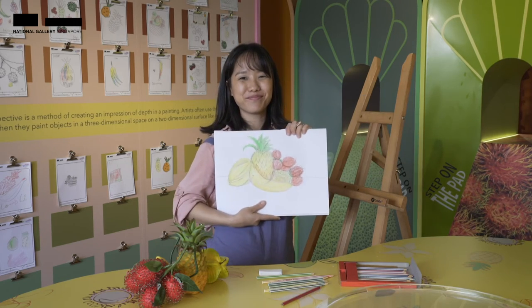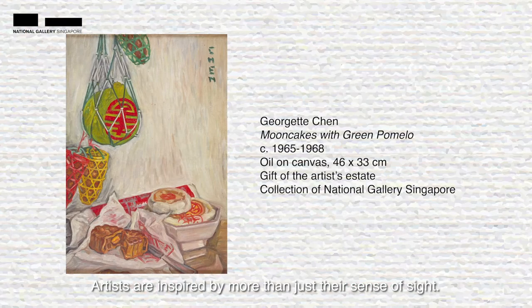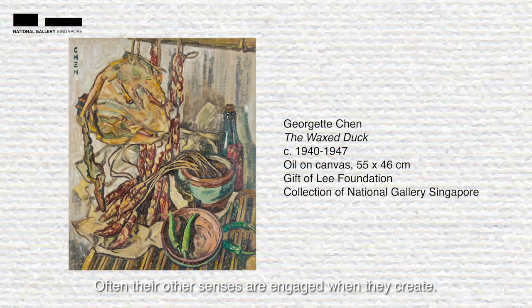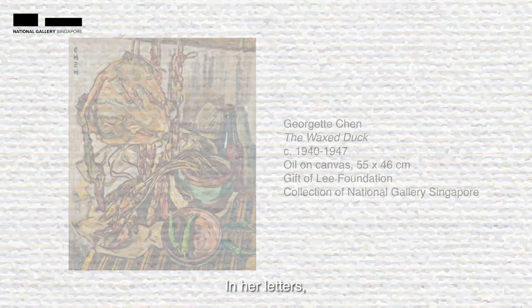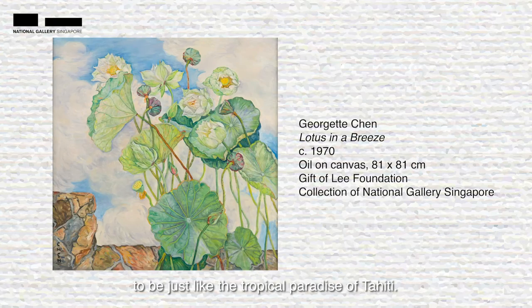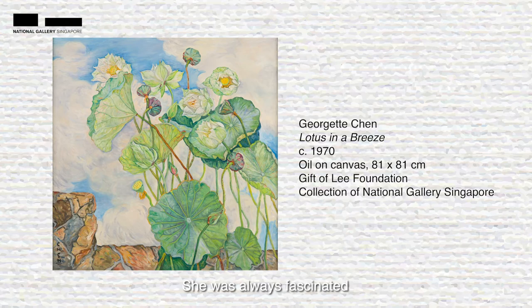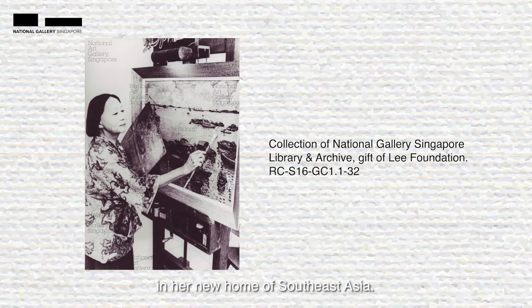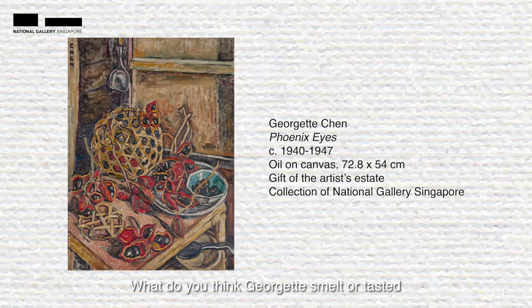And we are done! Artists are inspired by more than just their sense of sight. Often, their other senses are engaged when they create. In her letters, Georgette Chen describes Singapore to be just like the tropical paradise of Tahiti. She was always fascinated by the sights and smells around her in her new home of Southeast Asia. What do you think Georgette smelled or tasted when she encountered tropical fruits?